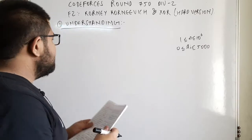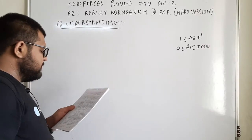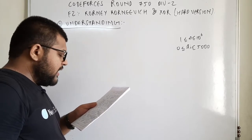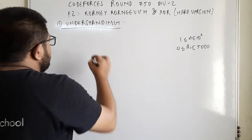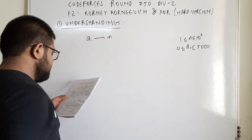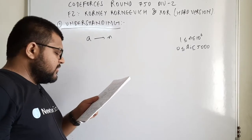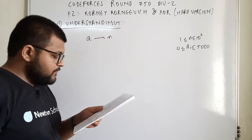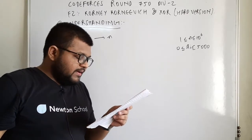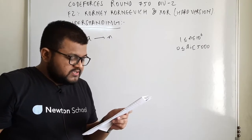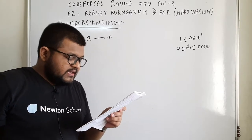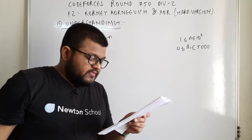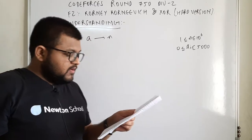As always, let us start by understanding the question - Korny Kornevich and XOR hard version. This is the harder version of the problem with bigger constraints. Korny Kornevich is given an array A of length n. He recently read about bitwise XOR and wished to experiment with it. For this purpose he decided to find all integers x greater than or equal to 0 such that there exists an increasing subsequence of the array in which the bitwise XOR of the numbers is equal to x.